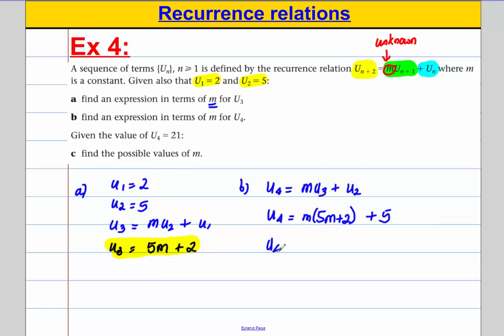So u4, I could expand this bracket out like so, it would be 5m squared plus 2m plus 5. And that is an expression in terms of m for u4. It's got m squared, m and 5.